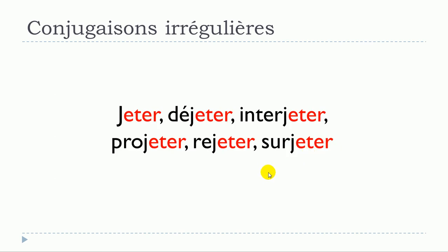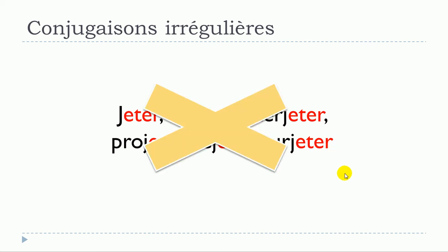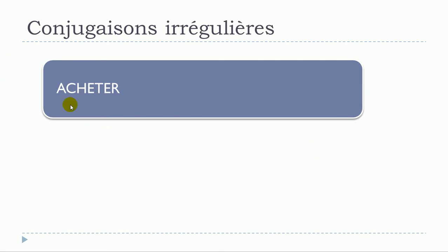What we should keep in mind is that this family of verbs — JETER is the first one, and after that all the verbs will be based on JETER: DÉJETER, INTERJETER, PROJETER, REJETER, and SURJETER — these verbs won't follow the same rule. So I've chosen the verb ACHETER, which is quite useful, meaning 'to buy.' It ends in TER, so it belongs to the first group.